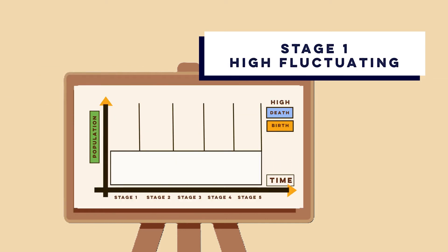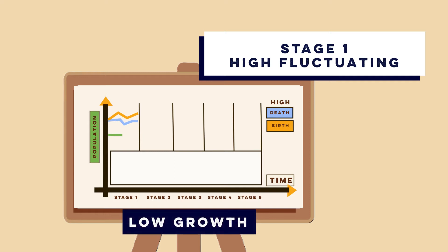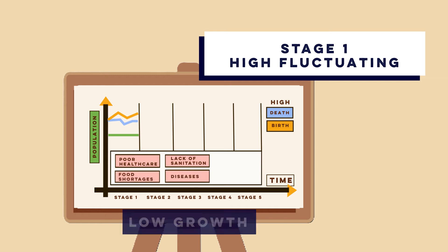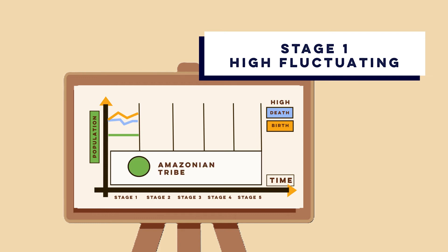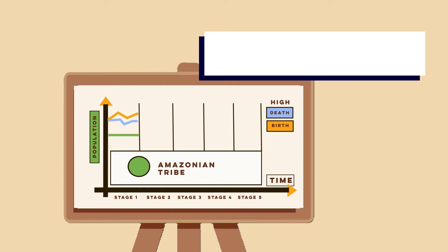Stage 1 is high fluctuating. In stage 1, birth rates and death rates are both very high, leading to little or no population growth. This is because of poor healthcare, lack of sanitation, food shortages and disease, which keeps death rates high, while birth rates stay high to compensate for this. No countries remain at this stage today. However, some remote tribes, such as the Amazonian tribes in Brazil, still experience similar conditions.